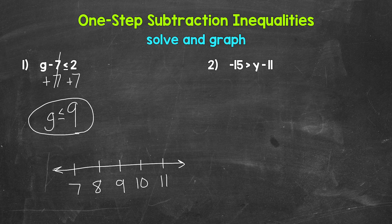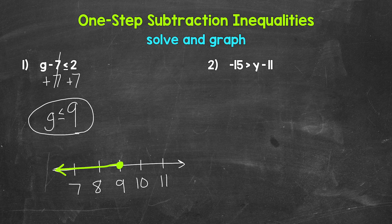Remember, when it comes to graphing inequalities, a filled circle means that the number is included — it's a solution. An open circle means the number is not included — it's not a solution. Here, g is less than or equal to nine, so nine is included. We need a closed circle at nine. Then we need to represent the less than part, so we draw an arrow going left towards all of the values less than nine. That represents g is less than or equal to nine.